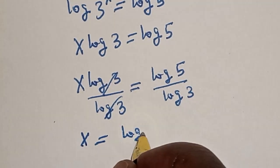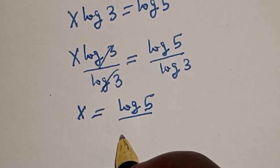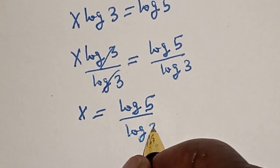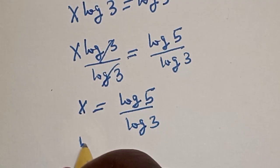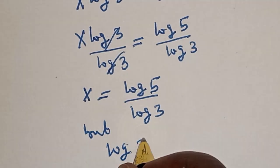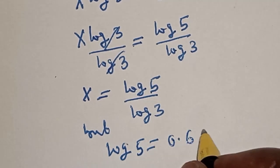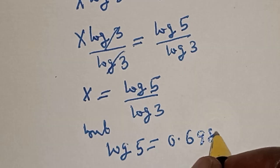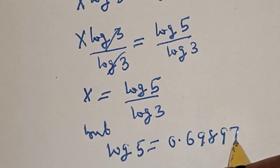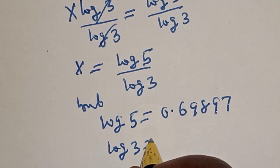But log 5 is equal to 0.69897 and log 3 is equal to 0.47712.